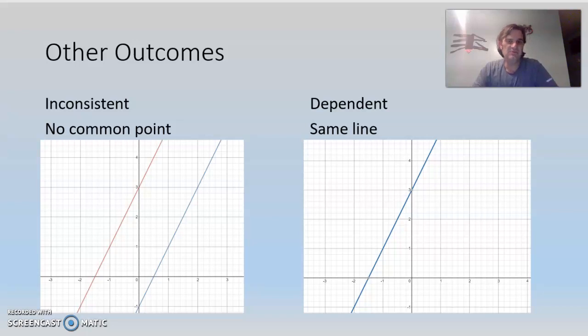But I want to show you two other outcomes which, when people see them, they may get scared if they're not familiar with them. But I have two graphs here. So the left one is two lines, and what you might say about this from geometry is they are parallel lines, if you look at them, because they don't intersect.